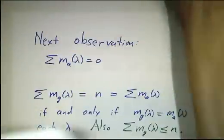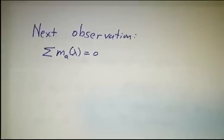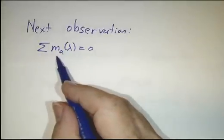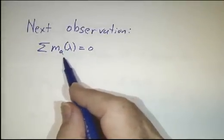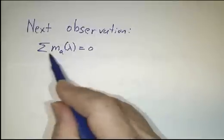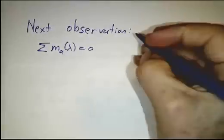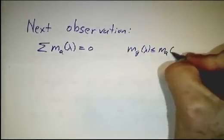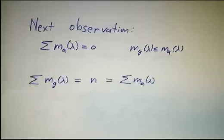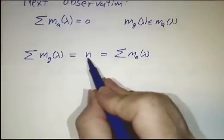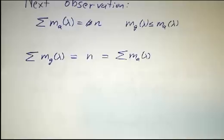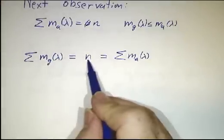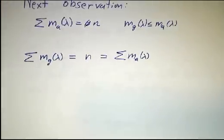With that in hand, we next observe that the characteristic polynomial is an nth-order polynomial, and every nth-order polynomial has exactly n roots counting multiplicity. So the sum of the algebraic multiplicities is n. We know that the geometric multiplicities are less than or equal to the algebraic multiplicities, so the only way that the geometric multiplicities can add up to n is if they are all equal to the algebraic multiplicities.